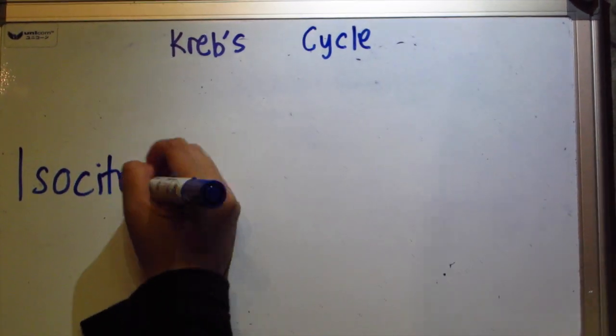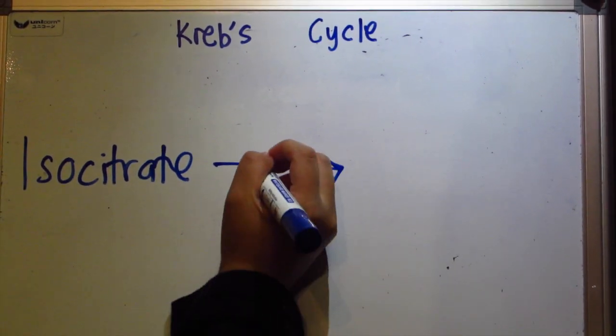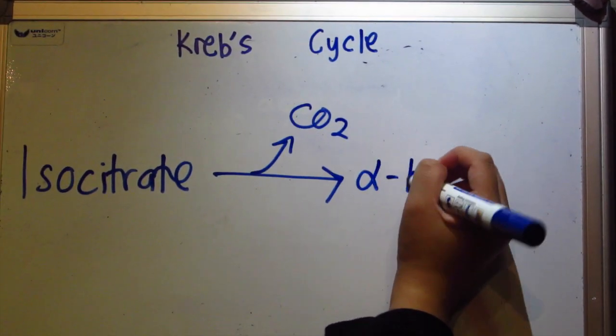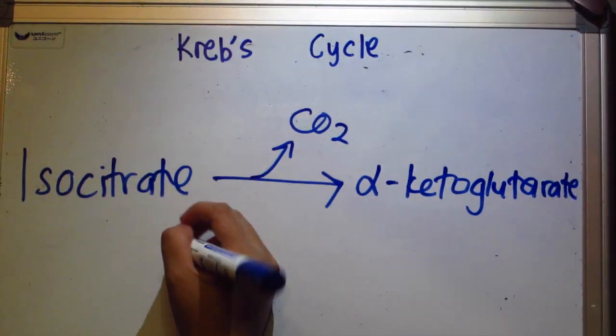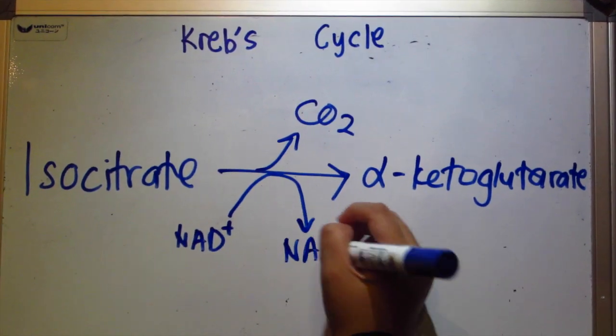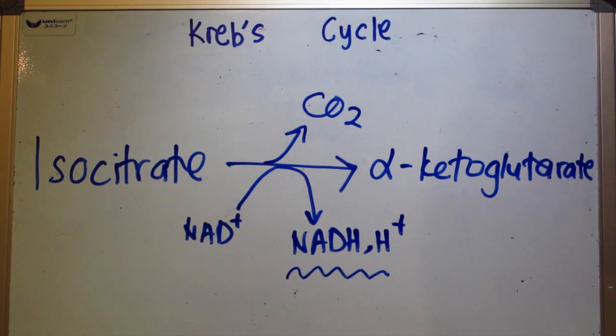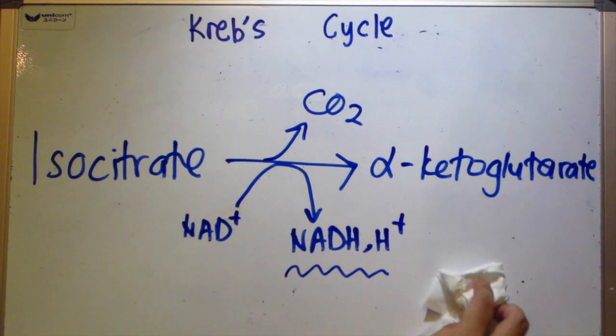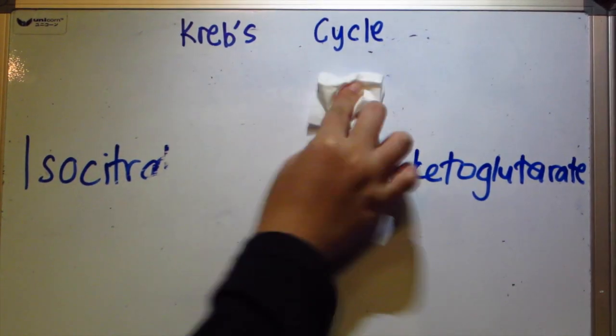Step 3, oxidative decarboxylation. Isocitrate is oxidized and loses a molecule of carbon dioxide forming a 5-carbon compound alpha-ketoglutarate. NAD plus is reduced to NADH plus H plus.